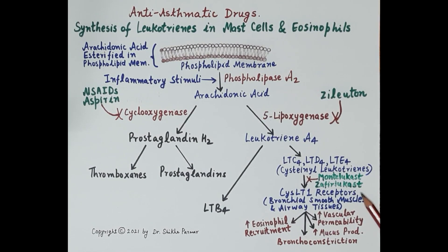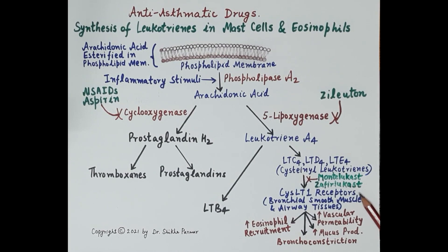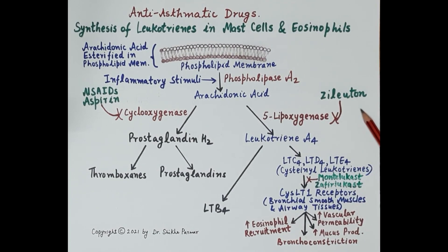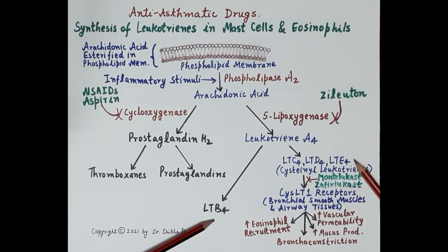Montelukast and zafirlukast are cysteinyl leukotriene 1 receptor antagonists. They inhibit binding of leukotriene C4, D4, and E4 to their receptors and thereby inhibit the actions of these leukotrienes. Zileuton is a 5-lipoxygenase inhibitor and inhibits the synthesis of cysteinyl leukotrienes as well as leukotriene B4.